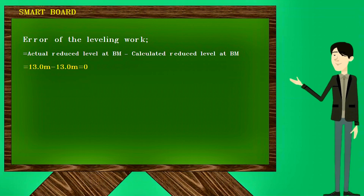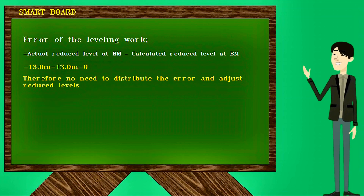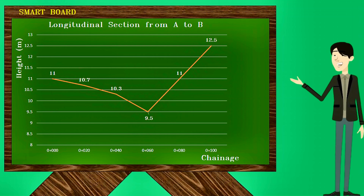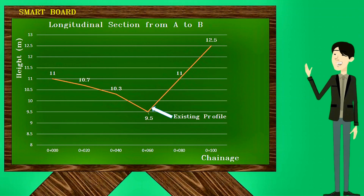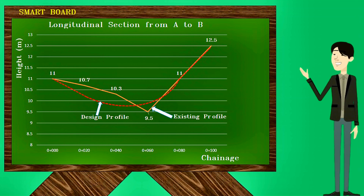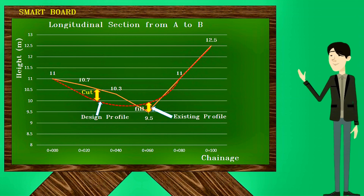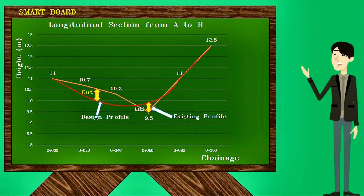Accuracy of the leveling work depends on the difference between the actual reduced level of the closing point and the calculated reduced level. In this example, the difference is zero, so there is no leveling error. Using these reduced levels, we can draw the longitudinal section showing how the existing ground level varies. In the same drawing, you can draw the design profile between A and B. Once you have both profiles, you can identify cut heights and fill heights, and calculate cut and fill volumes using area-volume calculations.